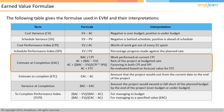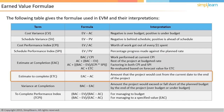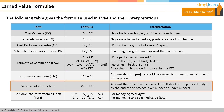Estimate to complete (ETC) is the cost of the project from this point to the end, calculated by subtracting the actual cost from the estimate at completion. Variance at completion (VAC) is calculated by subtracting the estimate at completion from the budget at completion, indicating whether the project is over or under budget at the end.